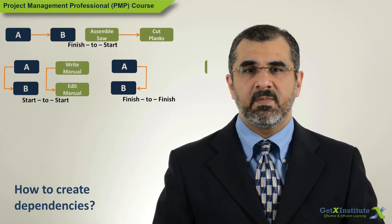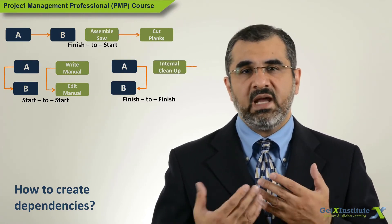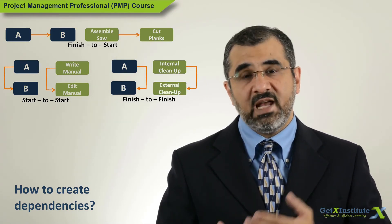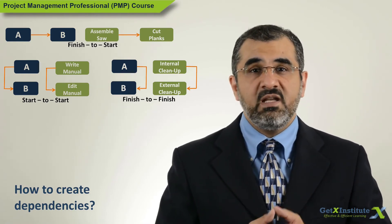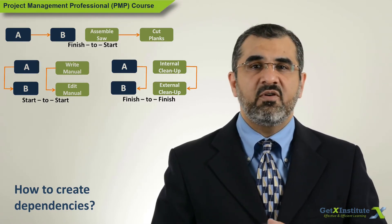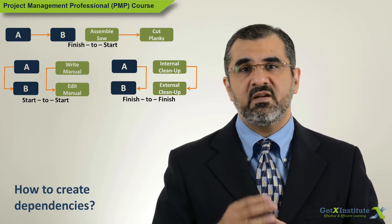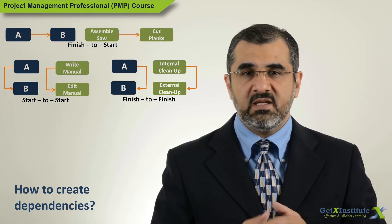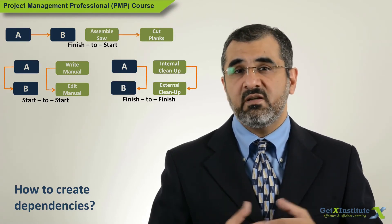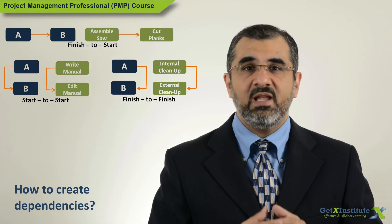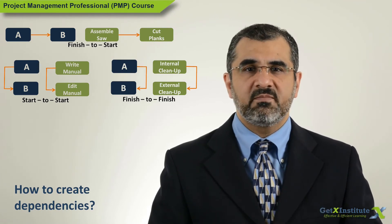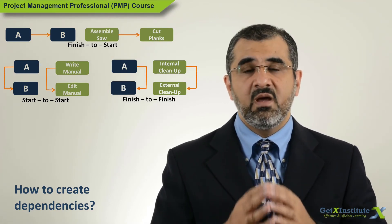Here is an example: two activities — internal cleanup and external cleanup. The project manager puts the dependency as finish internal cleanup, then finish external cleanup. External cleanup can be done in parallel, before, or after. If done before or in parallel, it will not be considered complete as long as internal cleanup is incomplete. Maybe there will be no work under external cleanup after internal cleanup is done, but it is possible that while the building is internally cleaned, some material may end up externally and will need to be cleaned. So this relationship will cover for that.